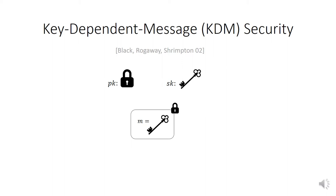In general, the message can depend on the secret key. The adversary can choose a function and gets an encryption of that function applied to the secret key. Security should still hold even in the presence of such encryptions.